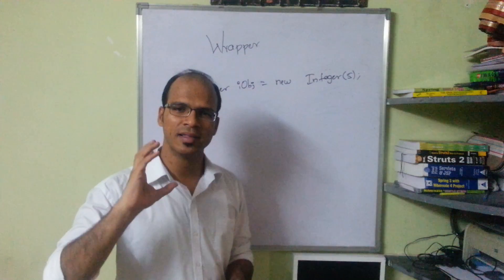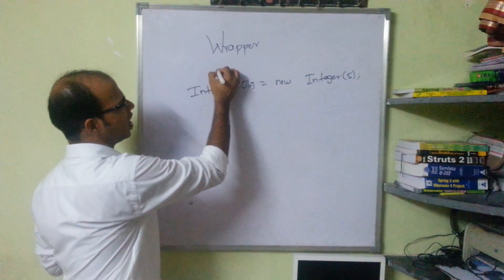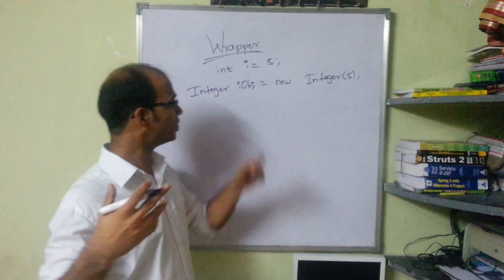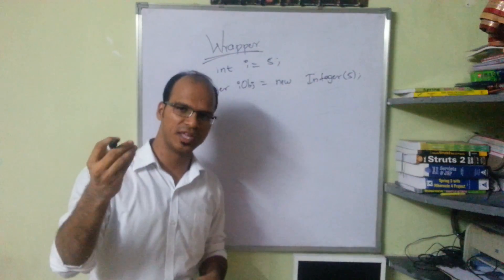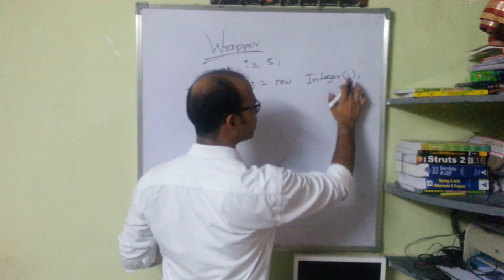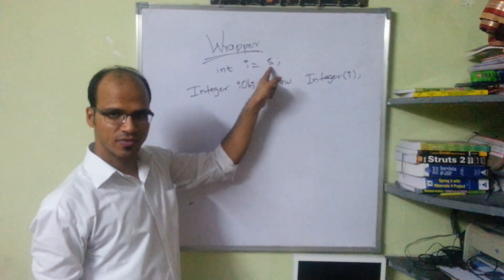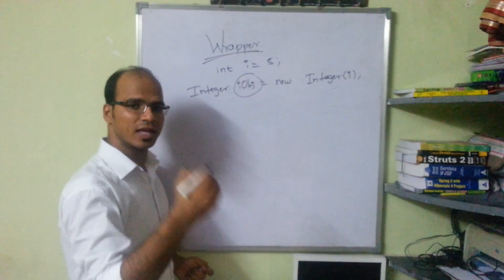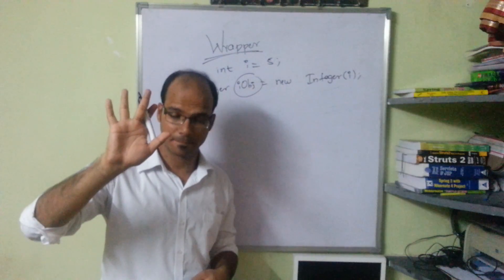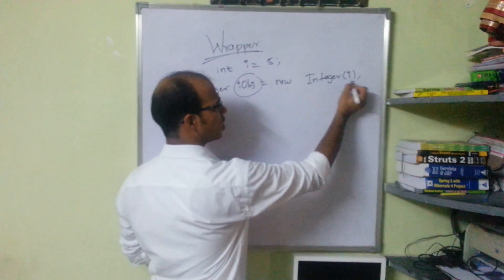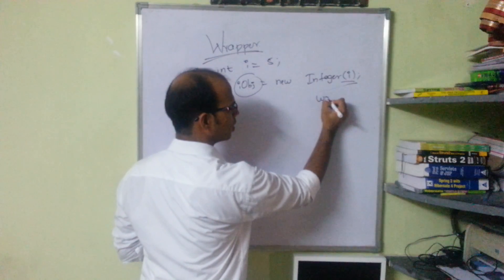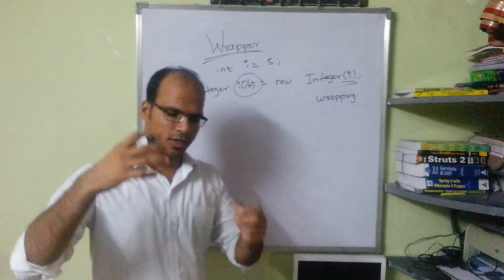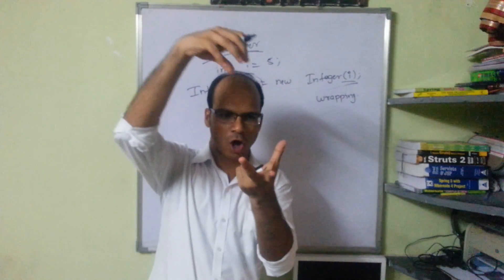There is a concept called wrapping and unwrapping. Suppose you have 'int i = 5'. You have to convert this int variable i into an object. So what you can do is pass i into iObj. The value 5 stored in i will be passed to iObj, and iObj is then an object with value 5. This concept — taking a variable and putting it into an object — is called wrapping.